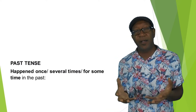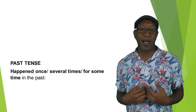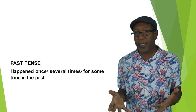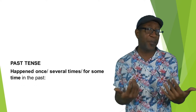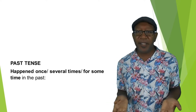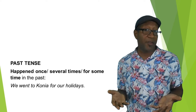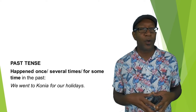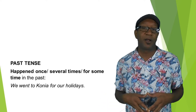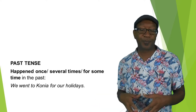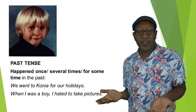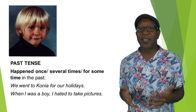First of all, we have to talk about the idea and the concept of the past tense. Past tense is used when something happened once or several times for some time in the past. Here are some examples: 'We went to Konya for our holidays.' Konya is a city in Turkey. And: 'When I was a boy, I hated to take pictures.'